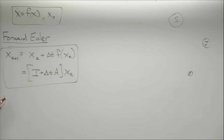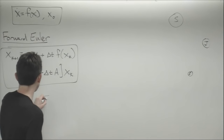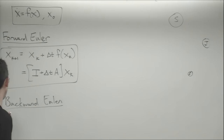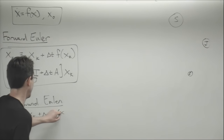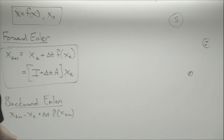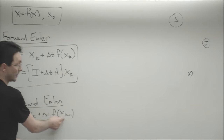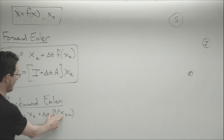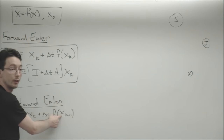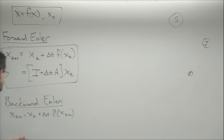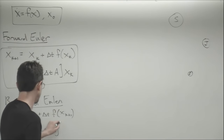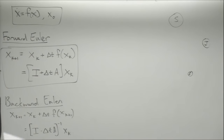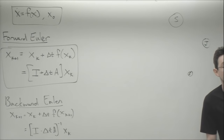We also have backward Euler, which is a slightly more clever scheme but much harder to implement for nonlinear systems. It is x_{k+1} equals x_k plus delta-t times f of x_{k+1}. It seems like a really subtle distinction — I just changed the subscript — but now my future state x_{k+1} is implicitly defined, making it really hard to solve for. For linear systems, it becomes: (I minus delta-t A) inverse times x_k. Any questions? This is just a review, but important.